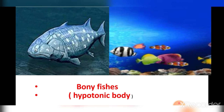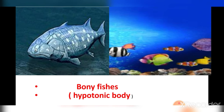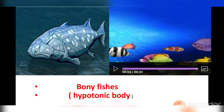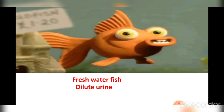The next example is bony fishes. These are hypotonic, meaning they have to remove excess water. Bony fishes are ancestors of freshwater fish but now live in marine environments, so their body is still hypotonic. They have to remove excess water from their body to maintain the balance of water and salt with their external environment.